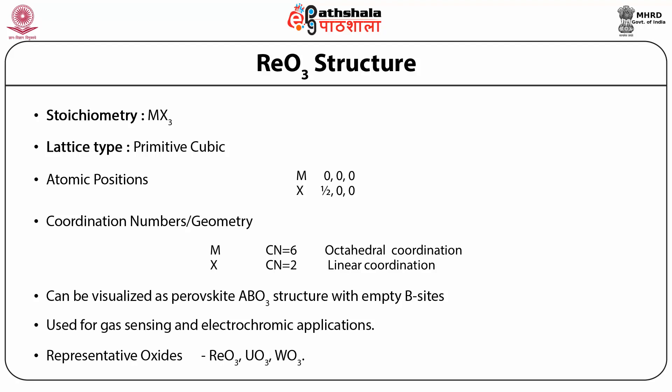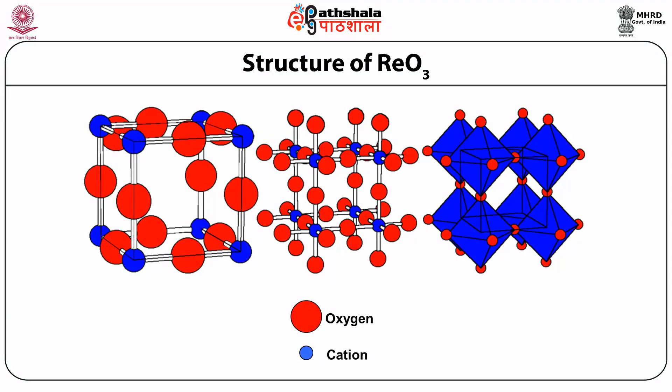Such oxides can be used for gas sensing and electrochromic applications. In the structure of ReO3, you can see three figures — all correspond to the ReO3 structure. In all three cases, the red atom corresponds to oxygen and the blue atom corresponds to the cation. Such structures are similar to perovskite structures (ABO3) with the absence of A type atoms. The cations occupy the corners whereas oxygen atoms occupy the edges — these are ReO3 type structures.